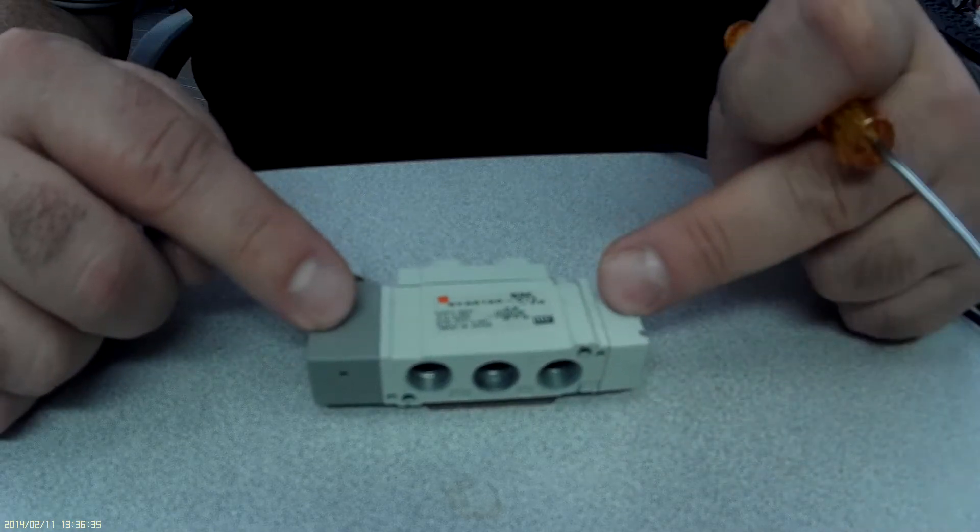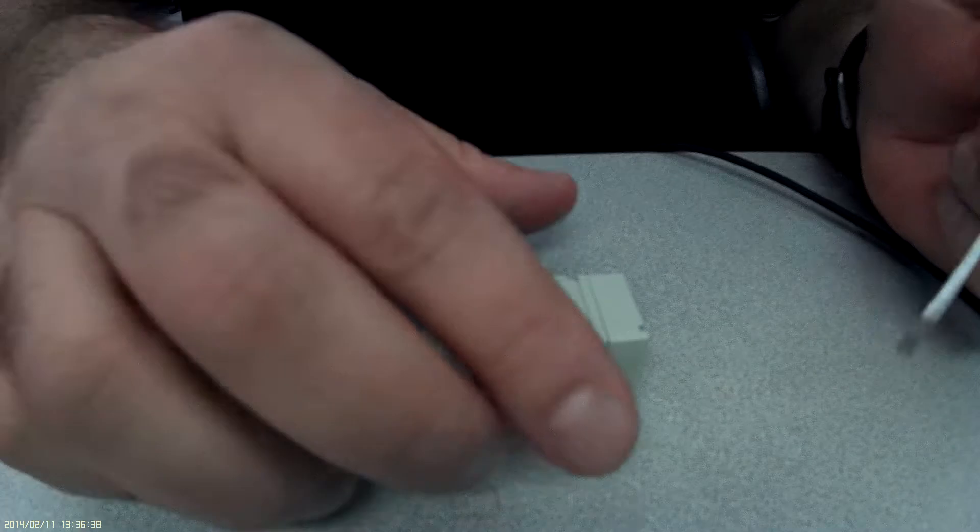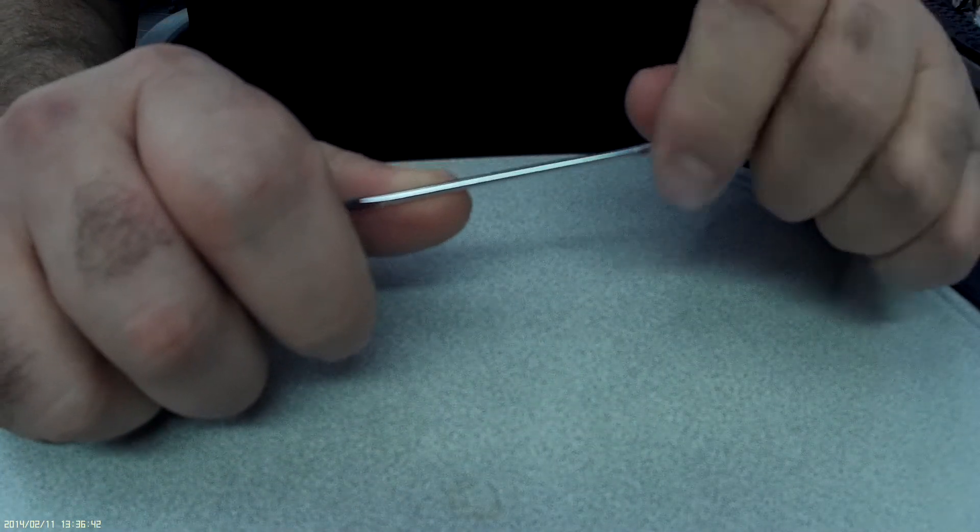These things on the ends are inputs and they control the movement of the shuttle on the inside. The shuttle is what directs the airflow.